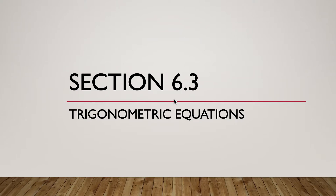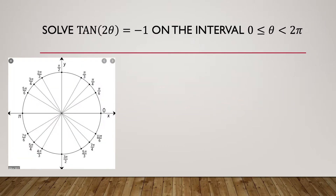We're going to continue section 6.3, looking at trig equations and talking about solving them. This is the second part of the section. The problem we're dealing with is solving tangent of 2θ equal to negative 1. What I want you to notice is that the part inside the parentheses — instead of just a theta — has something different, which indicates this problem will require a little bit more work.